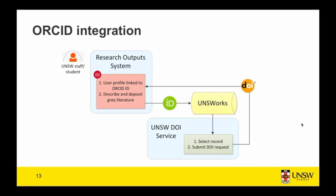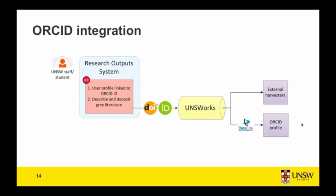The way we do that at UNSW is through our research output system. Users can link their ORCID profile within that system and that ORCID ID is then pushed to the repository if they deposit full text. They can then go into the DOI service, select that record, submit a request, and that DOI gets put back into the research output system. So both the DOI and the ORCID go into the repository and can be exposed via external harvesters like Trove and aggregators, as well as through the ORCID profile. Because of the connection between ORCID and DataCite, it can be easily claimed through DataCite and added to the user's ORCID profile.